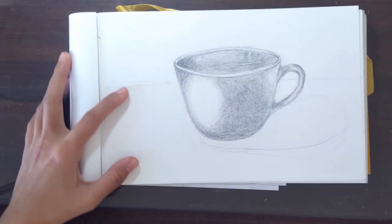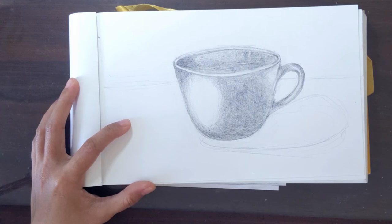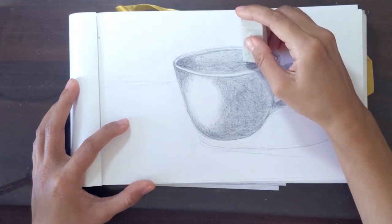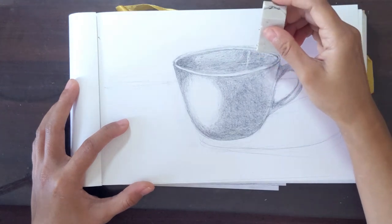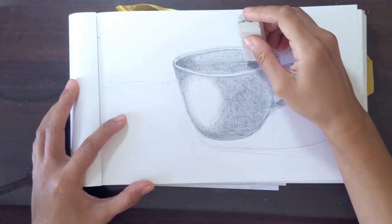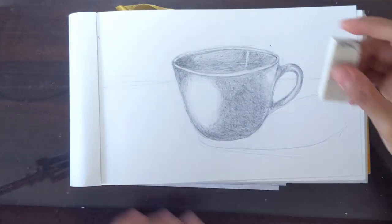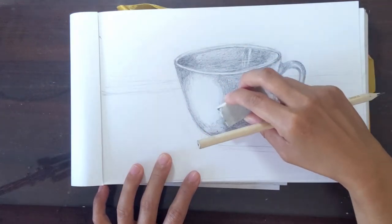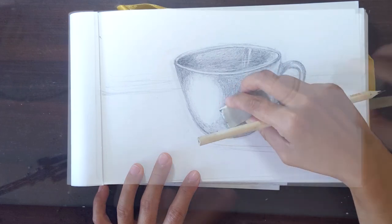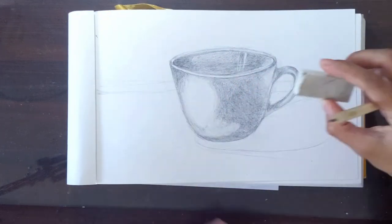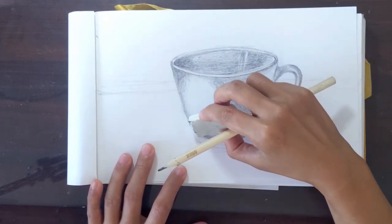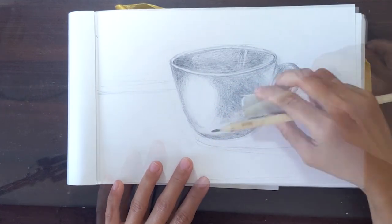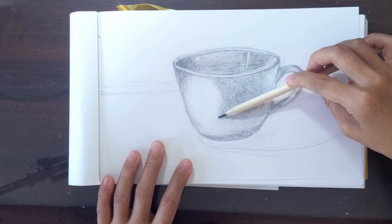If you find that you shaded too much, just get your eraser and erase some of the shadings you have made. Make sure to go back to your model and check where the light areas are. Don't forget to blend lightly after you erase.